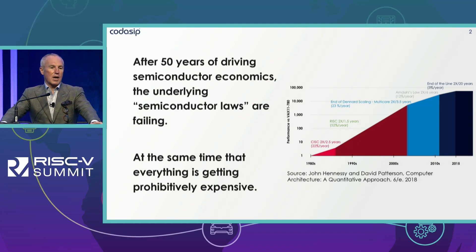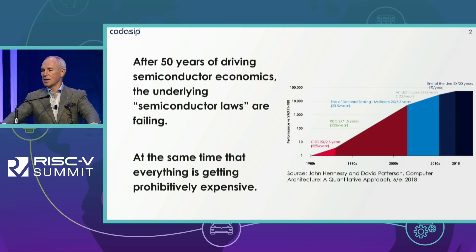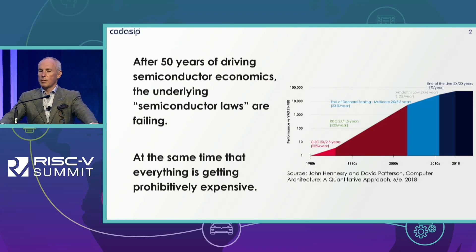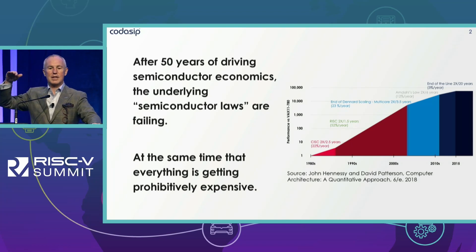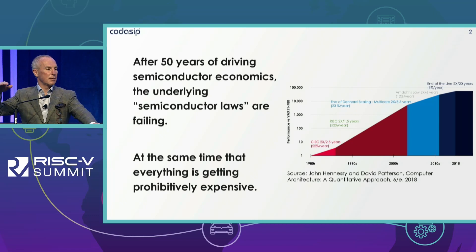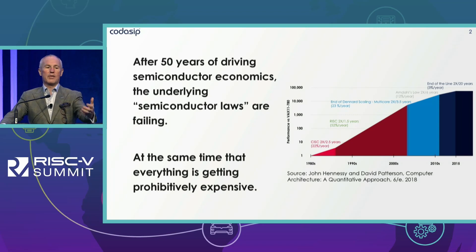If you look at the graphic on the right, which is a famous one from John and David, really about performance over time — and I, like Kevin, lived through my first processor job in the RISC-CISC wars — the whole point is that performance in a classic economic sense is a diminishing marginal return, meaning the second derivative went from positive to negative, and then the first derivative over time approaches monotonically zero.